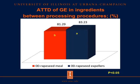Now for ATTD of gross energy in rapeseed products from different oil extraction procedures: the orange bar represents double-zero rapeseed meal from solvent extraction, and the blue bar represents double-zero rapeseed expellers from expeller extraction. ATTD of gross energy in double-zero rapeseed meal was 81.29, and for double-zero rapeseed expellers it was 83.23. ATTD of gross energy was greater in double-zero rapeseed expellers than in double-zero rapeseed meal from solvent extraction.